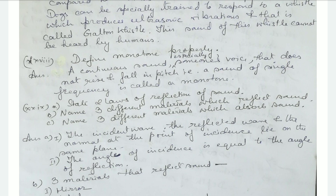Define monotone. A monotone is a continuous sound, especially of someone's voice, that does not rise and fall in pitch — that is, a sound of single frequency is known as monotone.